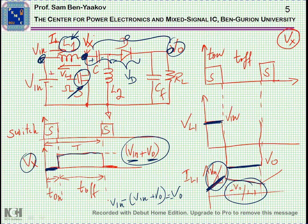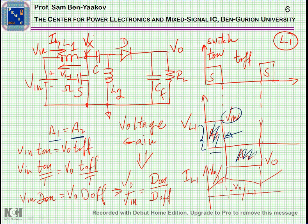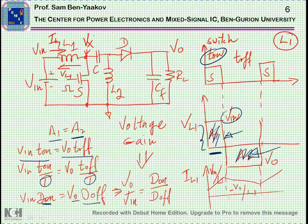So this will be the voltage imposed on the inductor, and of course the positive area must equal the negative area at steady state. Knowing that these areas are equal, we can do a simple calculation. The positive area is Vin times T_on, and the negative area is Vout times T_off. Dividing by T, we get: Vin times D_on equals Vout times D_off, which ends up with the expression for the voltage gain: Vout/Vin equals D_on over D_off.